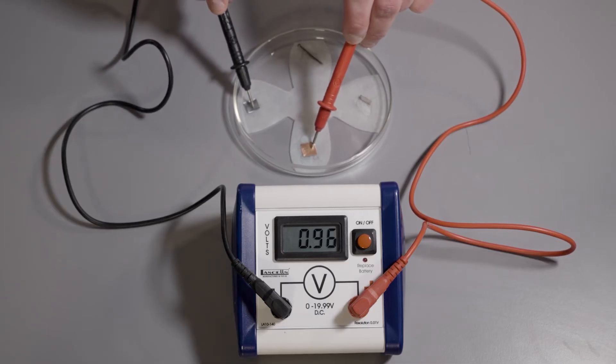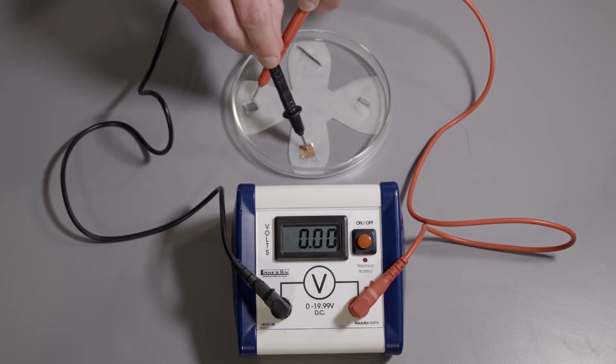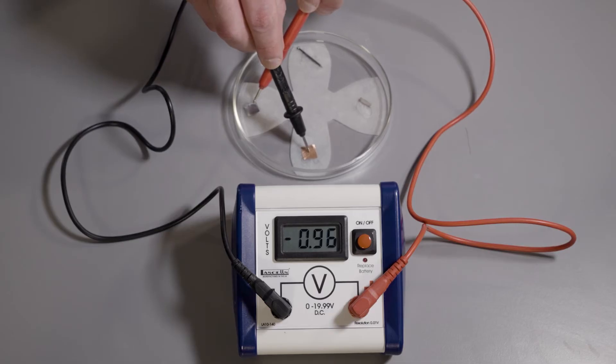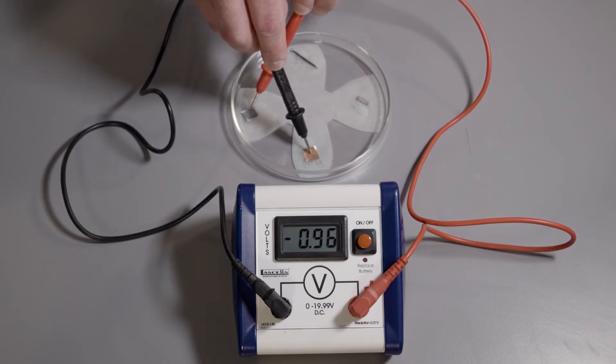Look what happens to the reading on the voltmeter if we swap over the leads. The zinc half cell is more negative than the copper because zinc is more readily oxidized to its ions, so the zinc metal is losing electrons. The copper is gaining them.